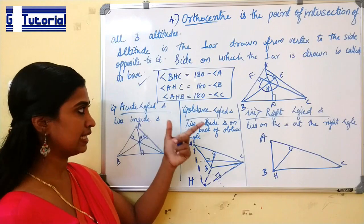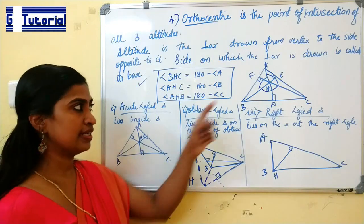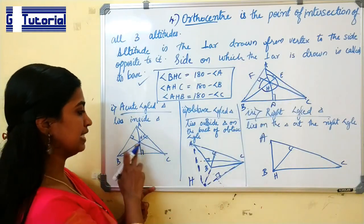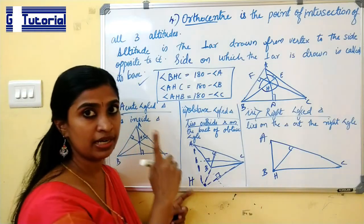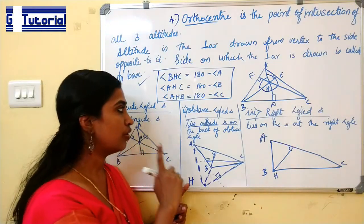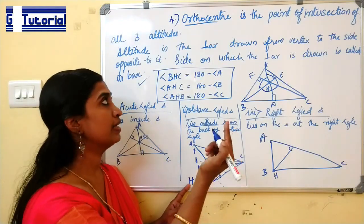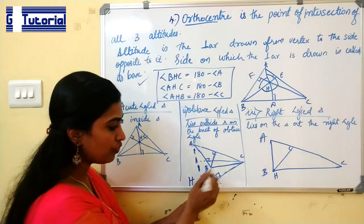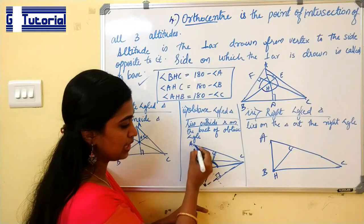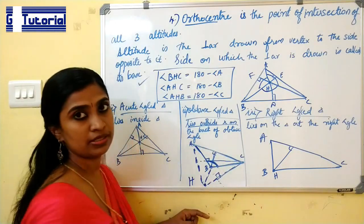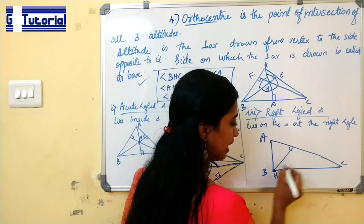For the orthocenter, there are also three cases. In case of an acute angle triangle, the orthocenter lies inside the triangle. In case of an obtuse angle triangle, it lies outside the triangle — but note that for the circumcenter it lies in front of the obtuse angle, whereas for the orthocenter it lies behind the obtuse angle, and it is outside triangle ABC. In case of a right angle triangle, the orthocenter lies at the vertex of the right angle, while the circumcenter lies at the midpoint of the hypotenuse.